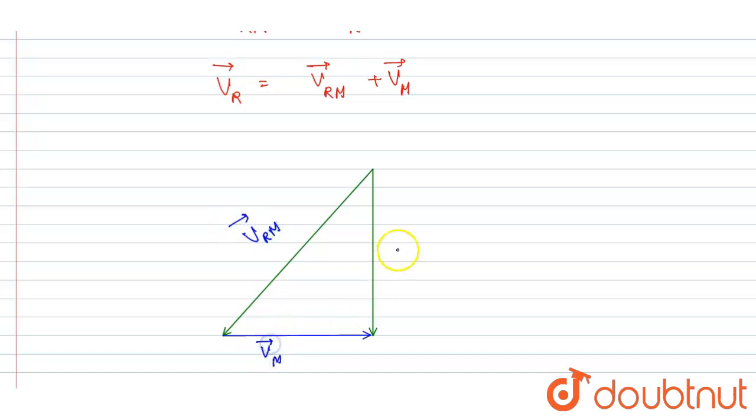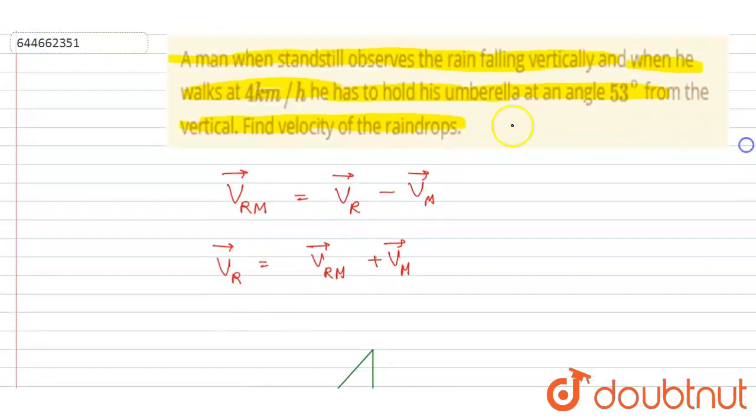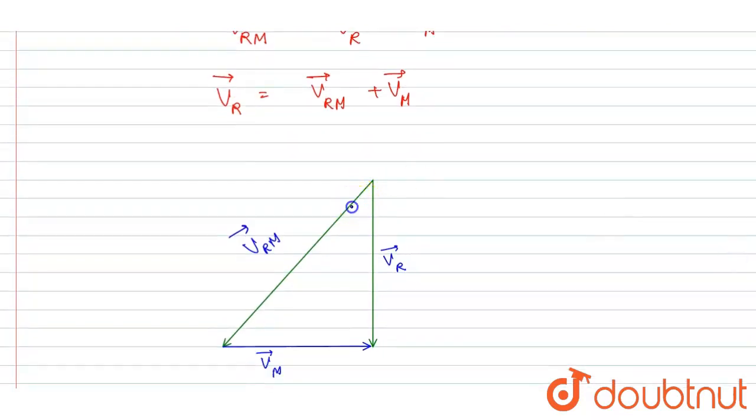So if you see here, this is having a magnitude - the velocity of the man is having a magnitude of 4 kilometers per hour and this angle is 53 degrees.